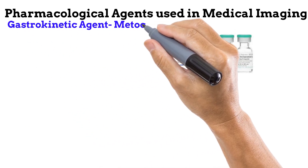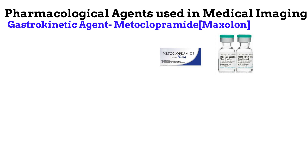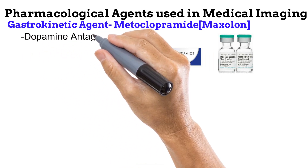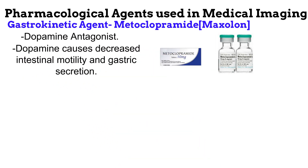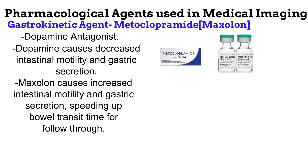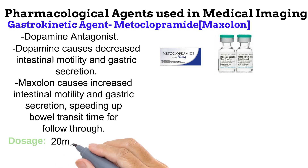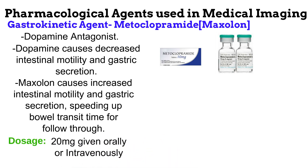Another type of pharmacological agents used are the gastrokinetic agents. An example is metoclopramide, commonly marketed as Maxolon. While antispasmodics prevent intestinal motility and gastric secretion, gastrokinetic agents perform the exact opposite. They are dopamine antagonists, meaning that they prevent the action of dopamine. Dopamine causes decreased intestinal motility and gastric secretion. Thus, by preventing the action of dopamine, gastrokinetic agents like Maxolon cause increased intestinal motility and gastric secretion. Maxolon is administered orally or intravenously with a dosage of 20 mg.